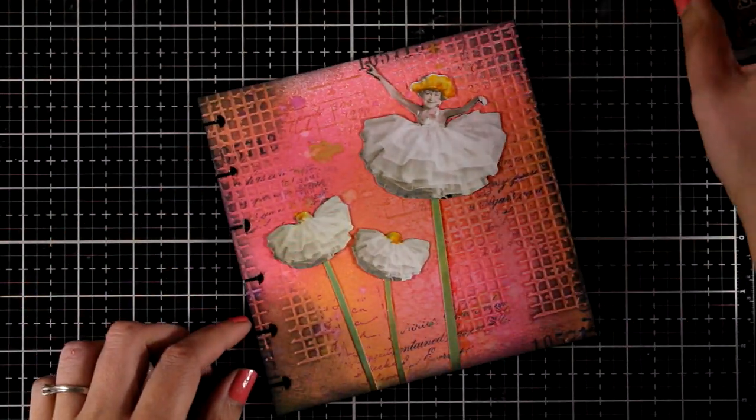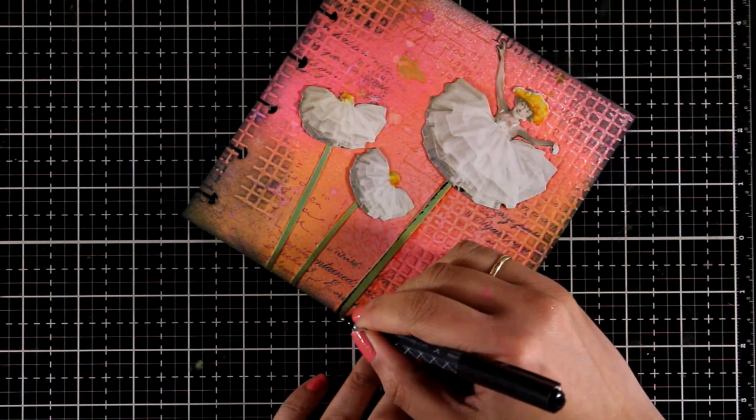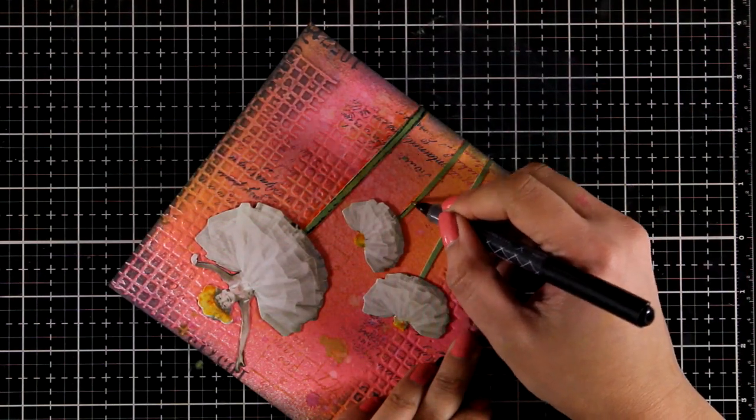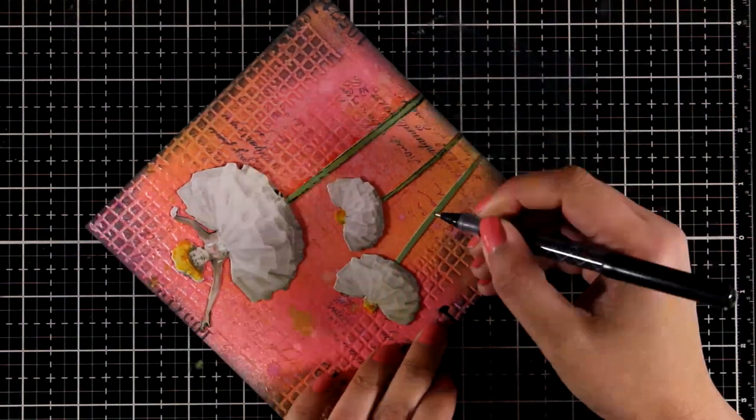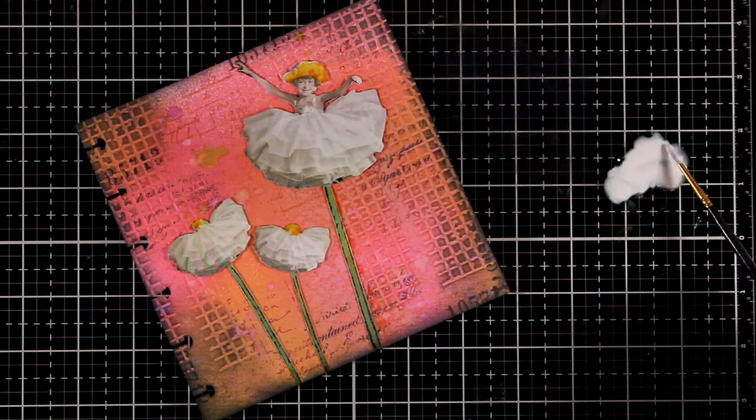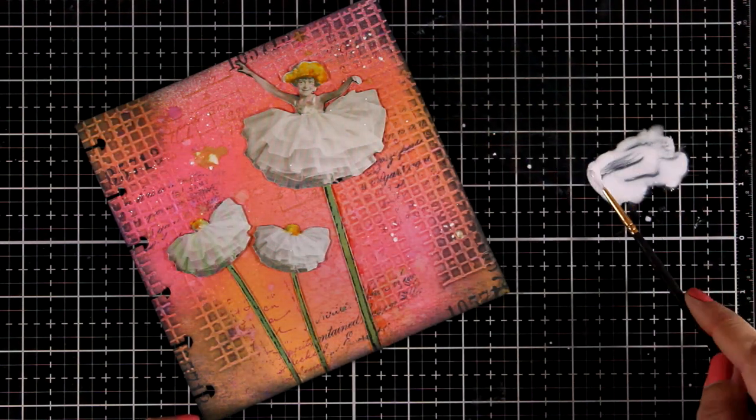Also, by touching my blending tool on the embossed areas, it brings them more to the foreground. As I'm adding more details here, I'm using my black thin marker to add some lines along the stems.